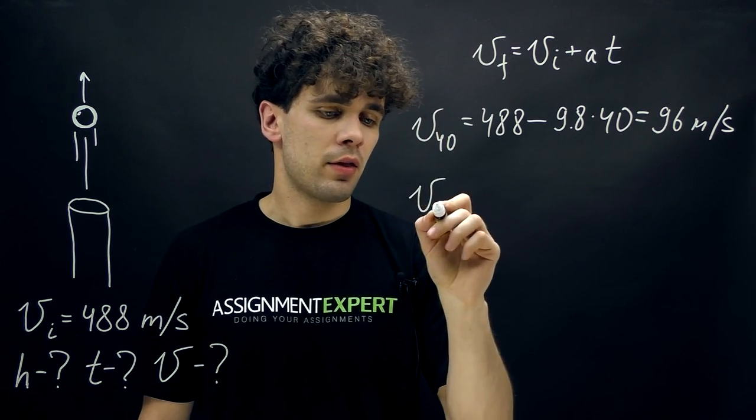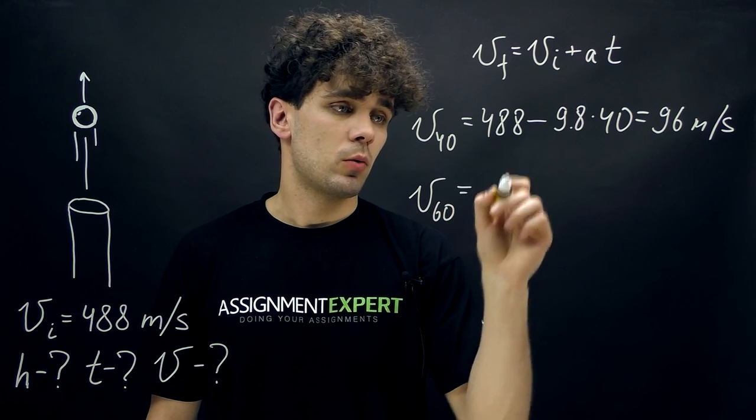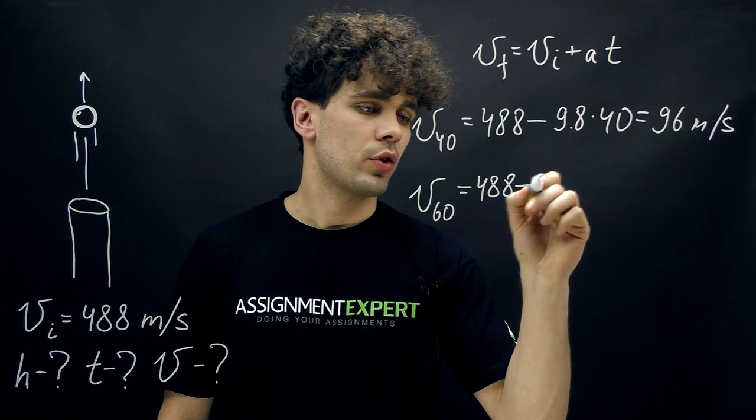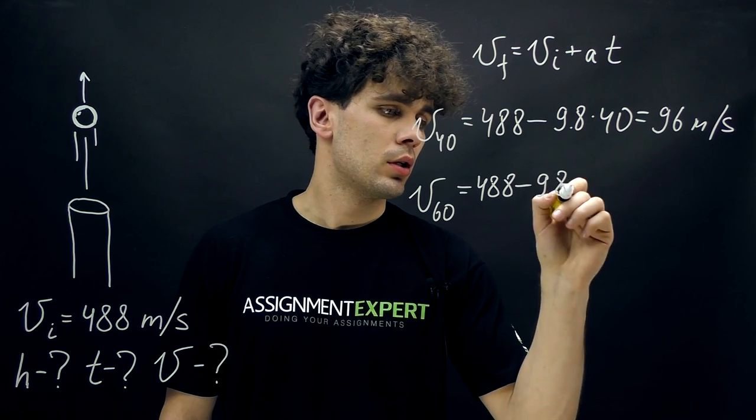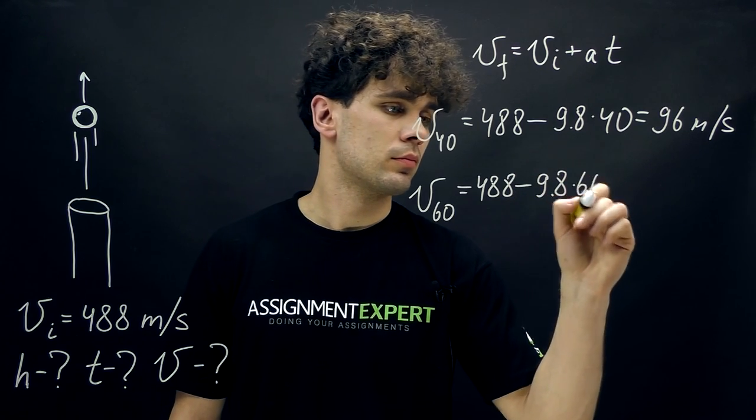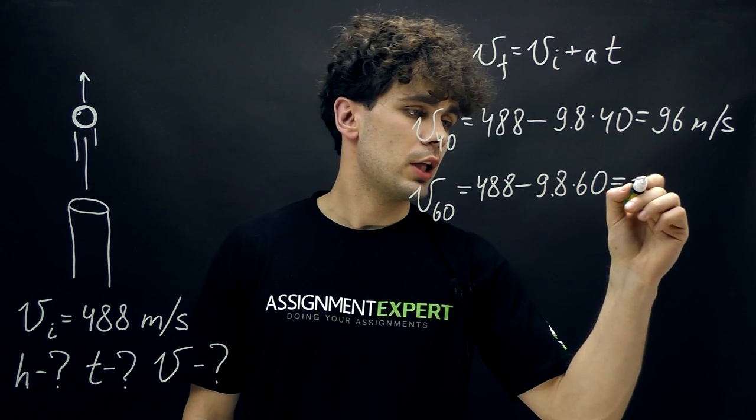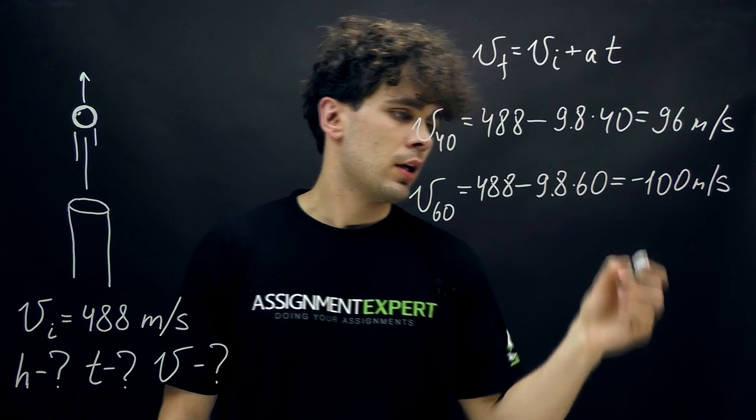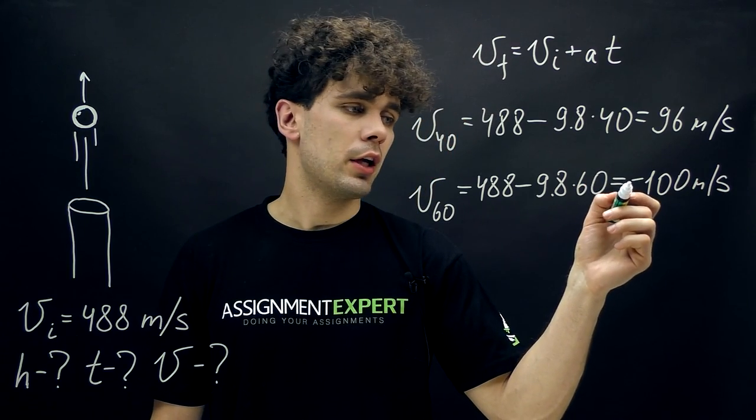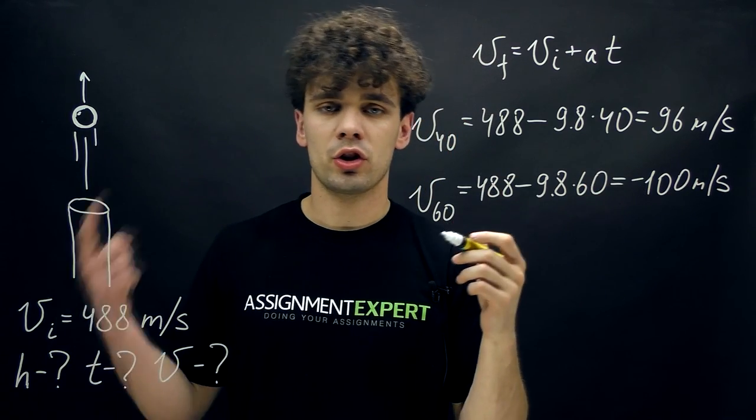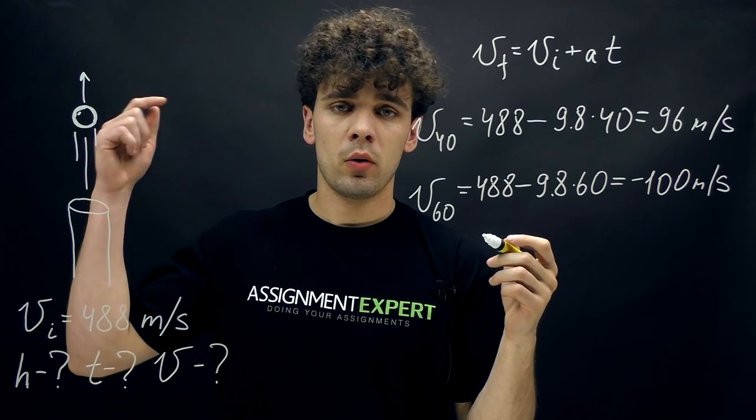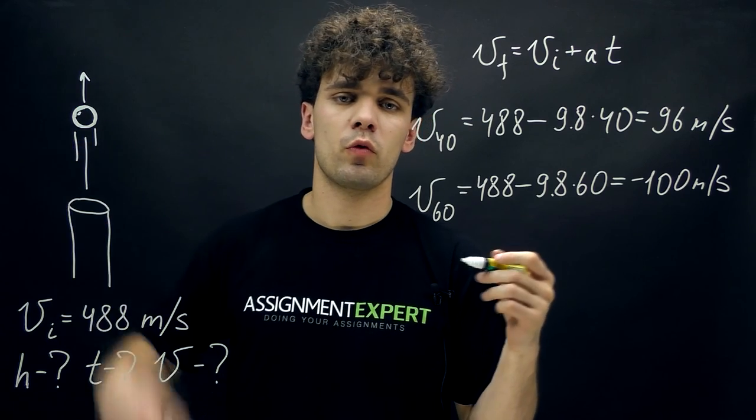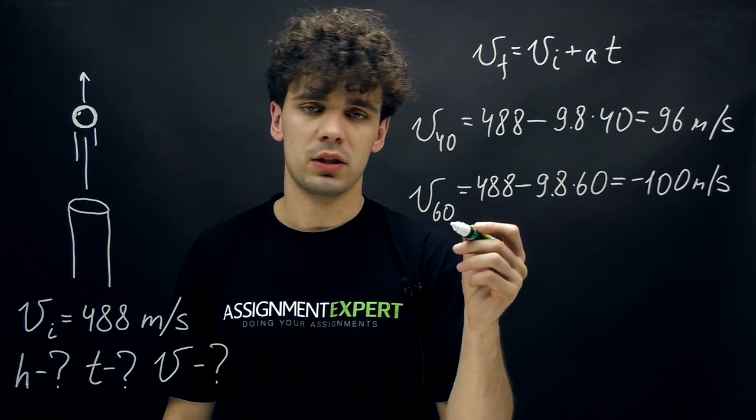Now the speed at 60 seconds equals 488 minus 9.8 times 60, and this is equal to negative 100 meters per second. And the negative sign over here indicates that the shell reached the highest point and now it moves downwards. So this is the speed for the downward movement of the shell at the 60 second.